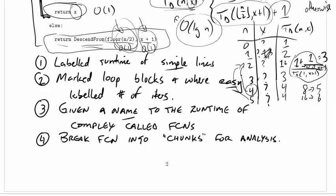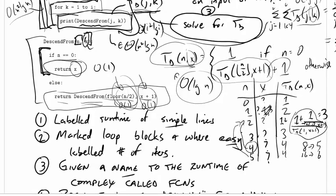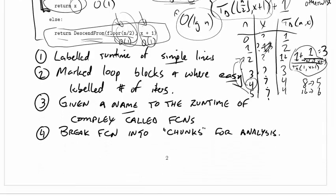We gave a name to the runtime of complex called functions, so we called that function descend from and we gave a name to its runtime, and that made it easier to reason about the runtime.